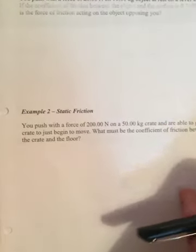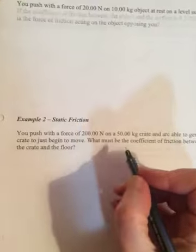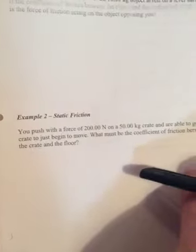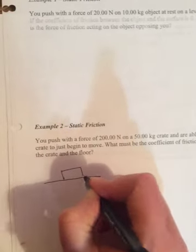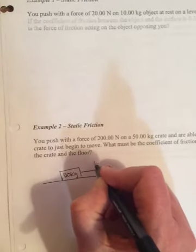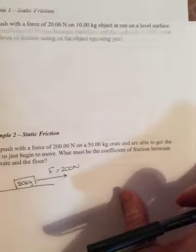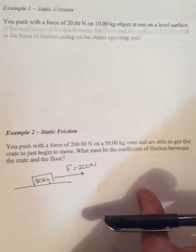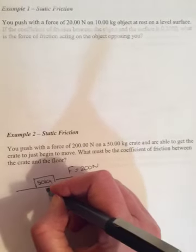While we were uploading, I found a blank example sheet, so we can do example two right here. It says you push with the force of 200 newtons on a 50 kilogram crate. So draw a level surface and a box and put 50 kilograms inside the box, and you're pushing with the force of 200 newtons, and are able to get the crate to just begin to move. What must be the coefficient of friction between the crate and the floor?